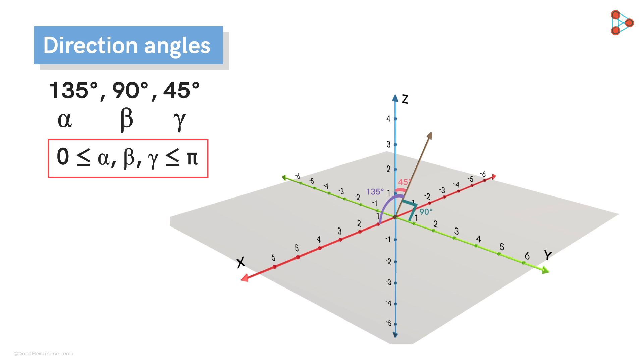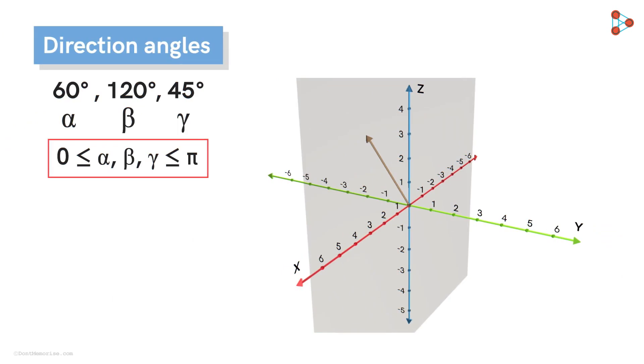I want to elaborate on a point that I made earlier about the range of these angles. Let's go back to our earlier example, where a vector is clearly visible in the second octant.